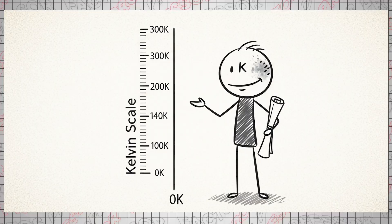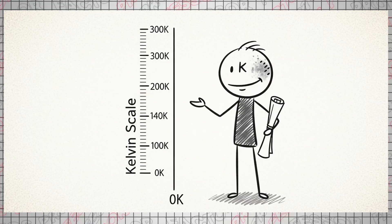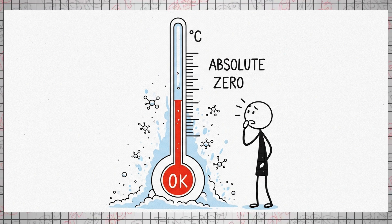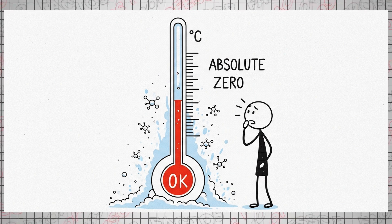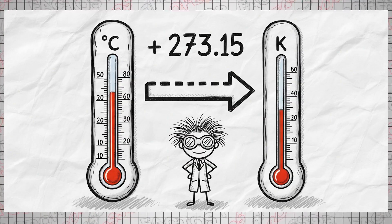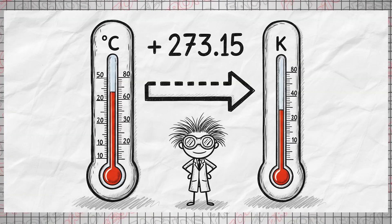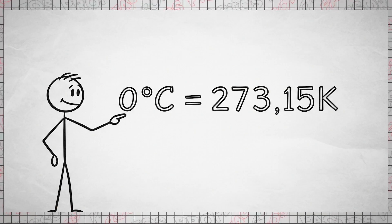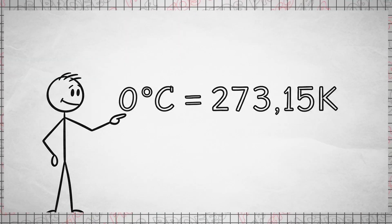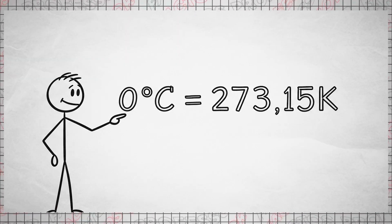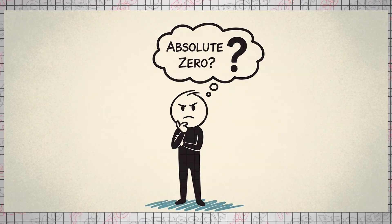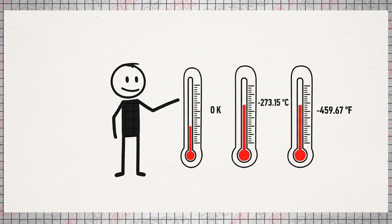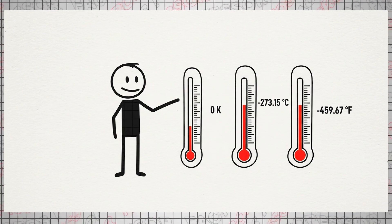Later, British physicist and mathematician William Thomson, also known as Lord Kelvin, developed an absolute temperature scale with no negative values, named the Kelvin scale. On the Kelvin scale, zero Kelvin (zero K) signifies absolute zero. To convert Celsius to Kelvin, one simply adds two hundred seventy-three point one five to the Celsius temperature. For example, zero degrees Celsius equals two hundred seventy-three point one five Kelvin.